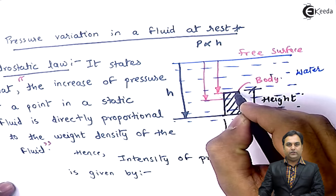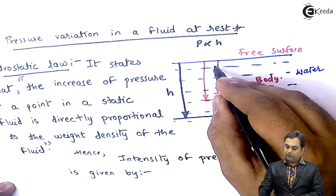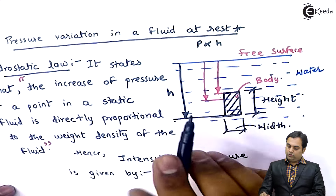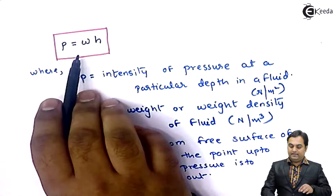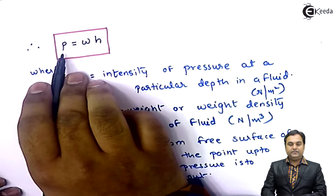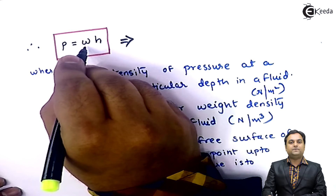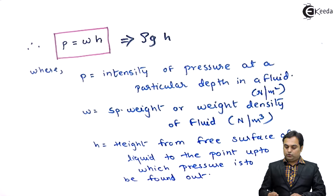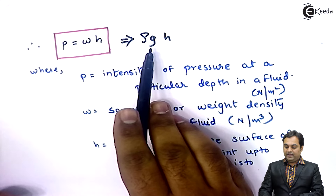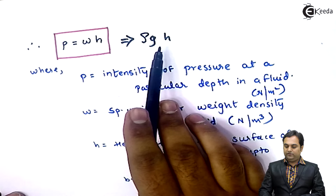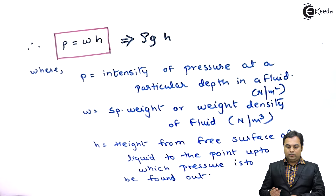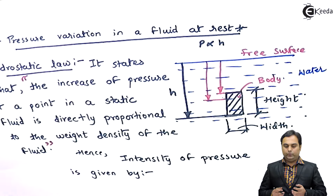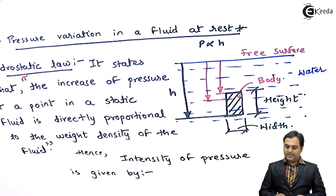The pressure acting at the top of the body will be less, and as we increase the height to h at the bottom, the pressure will be maximum. The formula can also be written as rho times g times h, where rho is the mass density and g is acceleration due to gravity. By varying h we get different values of pressure. This concludes our look at pressure variation in a fluid at rest, explained using a diagram and hydrostatic law.